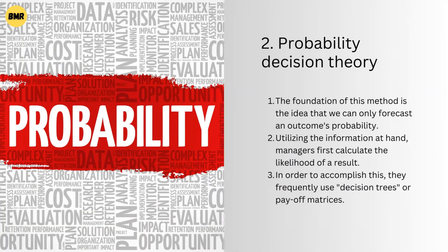As a result, it might not be very helpful when the situation is uncertain or unpredictable. The next technique is Probability and Decision Theory. The foundation of this method is the idea that we can only forecast an outcome's probability. We can never be entirely certain of how any course of action will turn out. Utilizing the information at hand, managers first calculate the likelihood of a result. Even their personal judgment can be used for this. They then use this probability data to make their decisions, frequently using decision trees or payoff metrics.